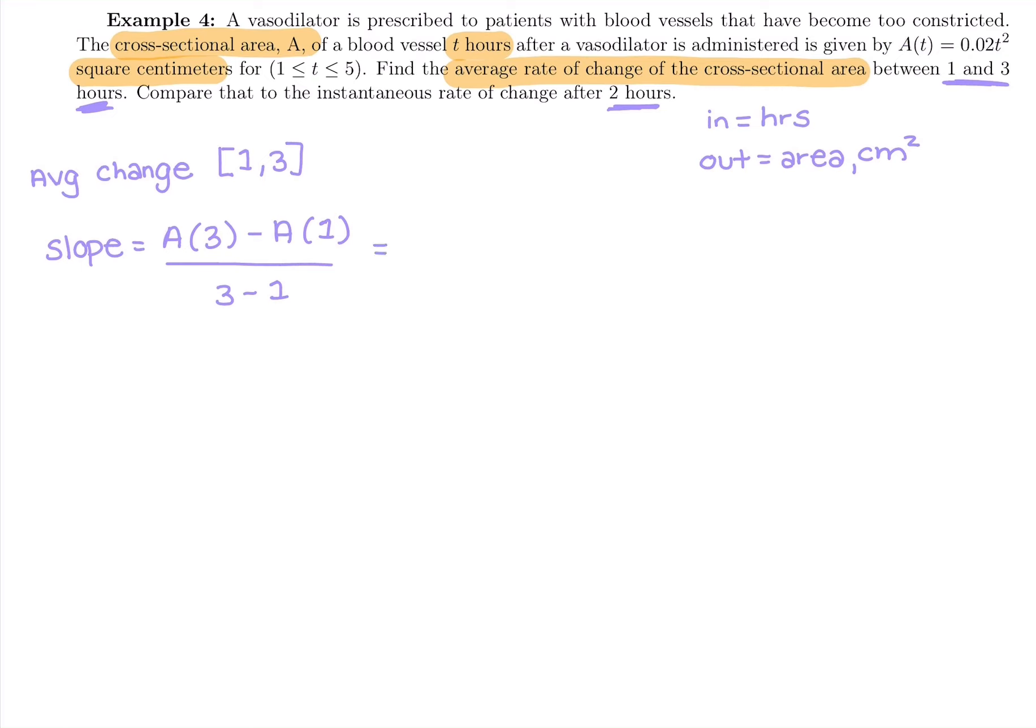So I can grab my calculator and do this on the side. You don't really have to write this out. I'm just showing you what I'm plugging in. I'm plugging into this original function, 0.02 T squared. So I'm going to do 0.02. My T value is three getting squared for the first piece, which is 0.18.